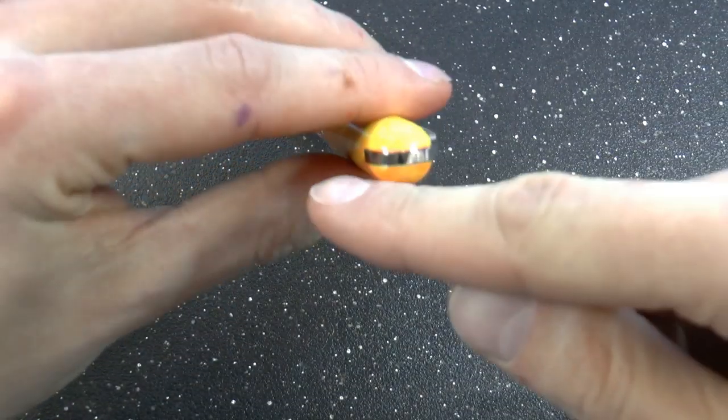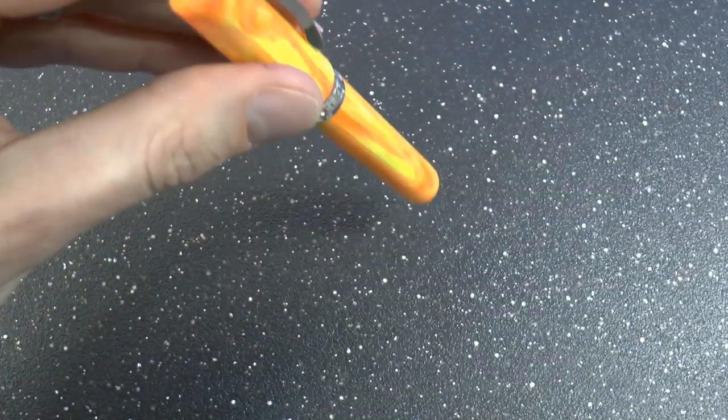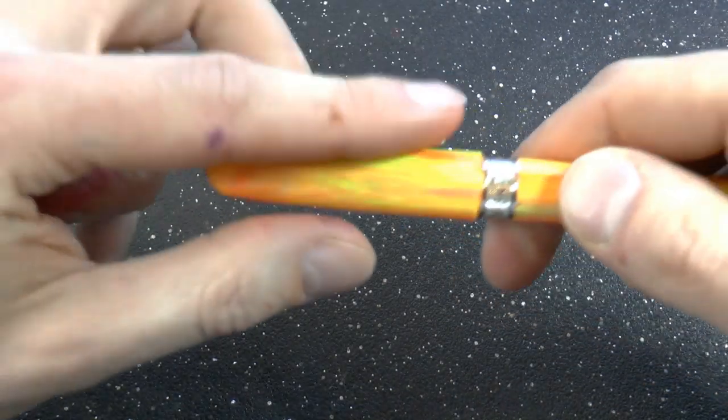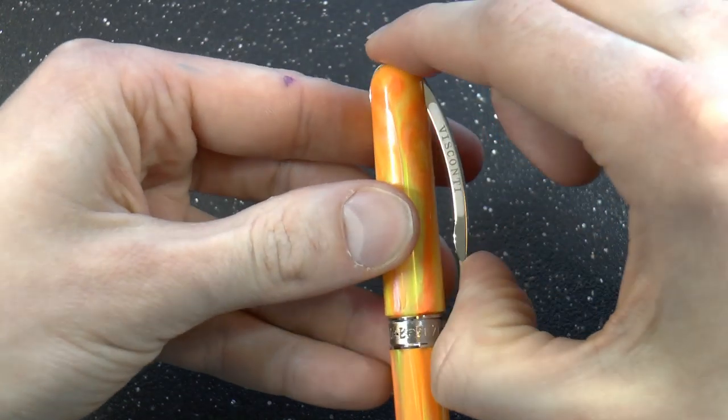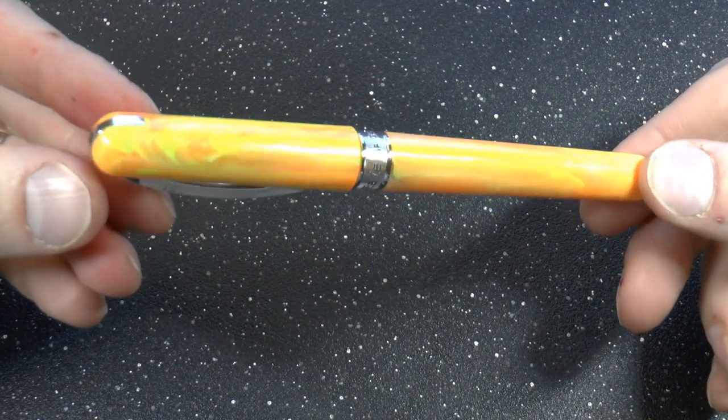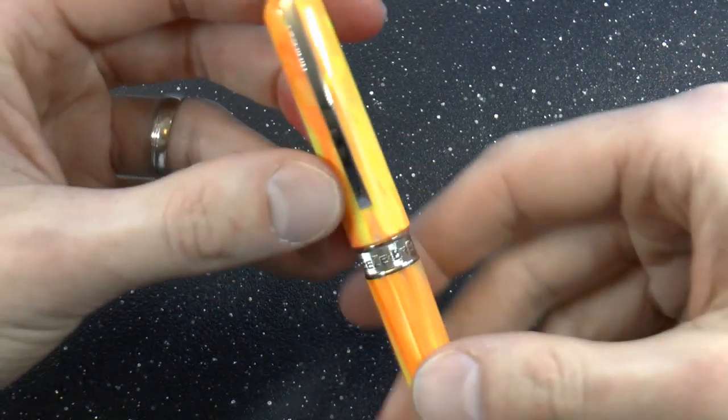On top here we have this metal thing that we have seen on other models from Visconti, like indeed the Rembrandt. So this is the continuation of the clip. We have the clip which people typically love or hate, I kind of like it. Supposed to be indestructible, it is spring-loaded, and this is the very attractive Mandarin finish.